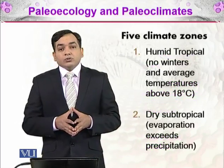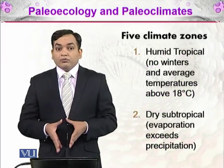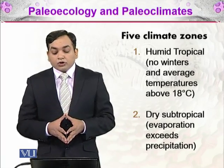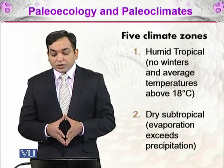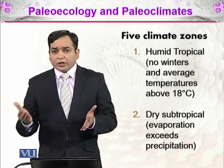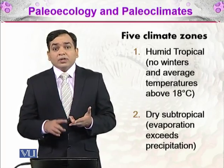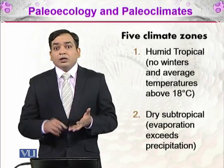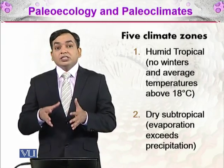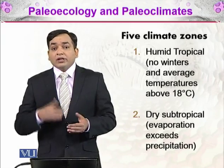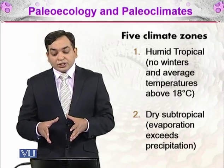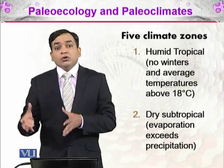There are five climate zones on the surface of the Earth, categorized based on conditions today. The first is humid tropical — no winters and average temperatures above 18 degrees Celsius. Humid tropical zones are located across the equator, including tropical rainforests in Malaysia, Indonesia, Nigeria, and Brazil. Across these regions, temperatures remain above 18 degrees Celsius throughout the year and there is no winter.